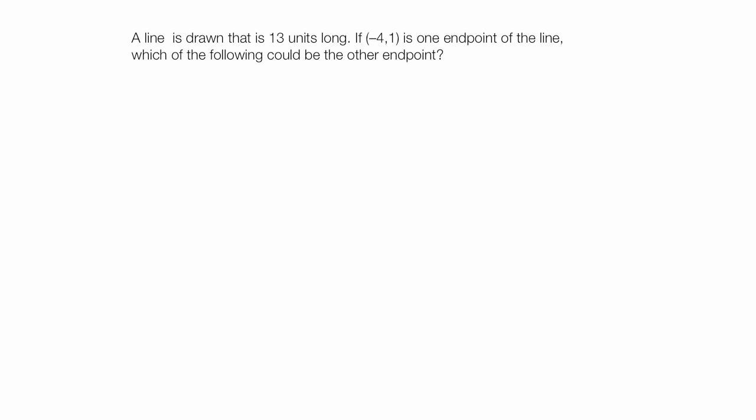Here's the question: A line is drawn that is 13 units long, and the beginning point or the starting point is (-4, 1). That's x is -4, y is 1. That's one endpoint. Then it asks which of the following could be the other endpoint, and then you're given a list of choices.